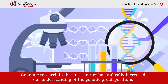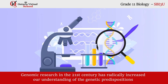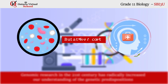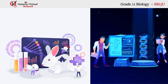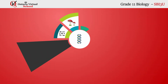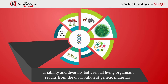In this unit, we will discuss the important social and environmental implications of both genetic and genomic research. You will also learn how the variability and diversity between all living organisms results from the distribution of genetic materials during the process of meiosis.